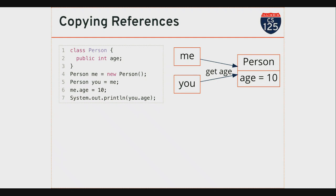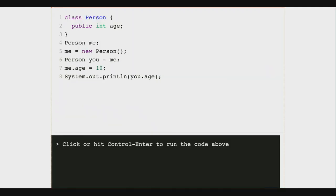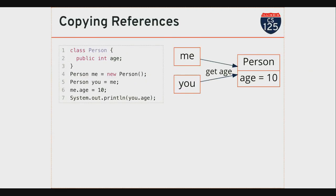Both me and you can set the age of this one Person object that I have in the system, and that change will be visible to both me and you. So again, the thing to start keeping in mind when we start working with references: there's this separation. The variable doesn't store the object — the variable stores a reference to the object. It allows you to make changes, call methods, change public instance variables. But those changes are visible to anyone else who has a reference to the same object.